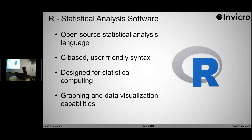Next is R. This is not an Invicro software, but I think it is useful in the industry in general and for data analysis. It's an open-source statistical analysis software that many of you are likely familiar with. It's got pretty user-friendly syntax, in my opinion — pretty human-readable — and there's a lot of good documentation online. It was designed for statistical computing, so there are a lot of packages and functions that come with it that just make handling data very easy. It also provides graphing and data visualization capabilities, which is really nice.